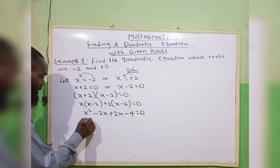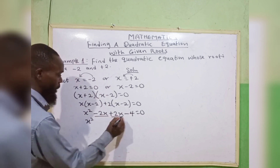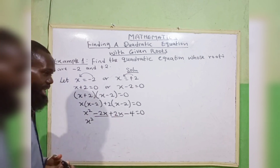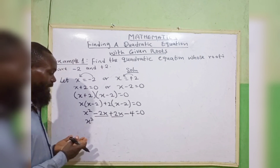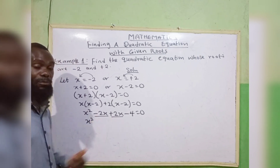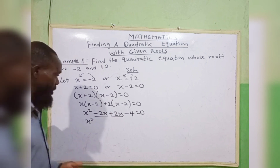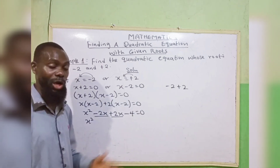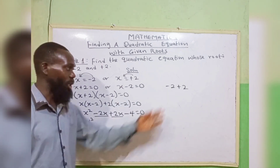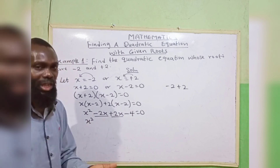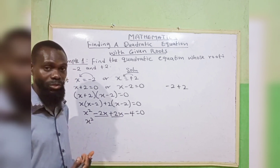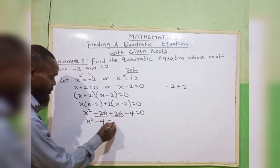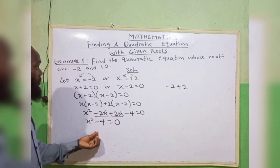Now we have x squared. You can see minus 2x and plus 2x — both have x, so we combine them. Minus 2 plus 2 gives 0, so those cancel out. We are left with minus 4 equals 0. So the quadratic equation for roots minus 2 and plus 2 is x squared minus 4 equals 0.